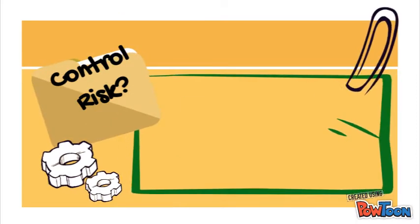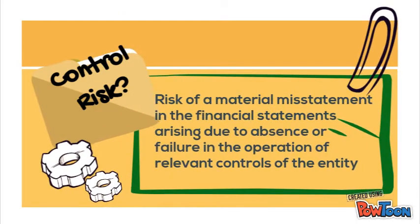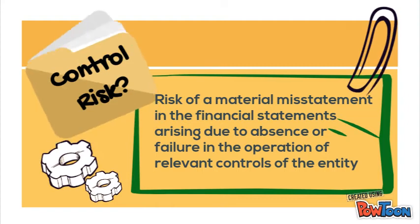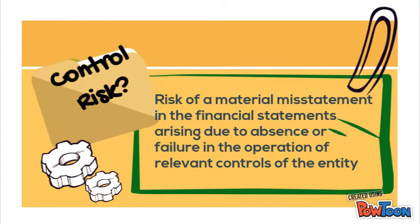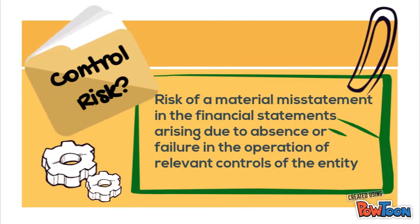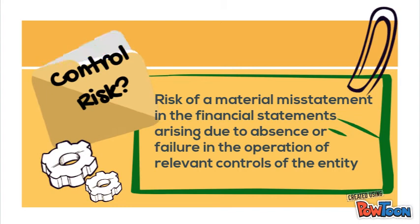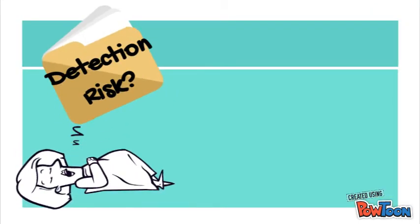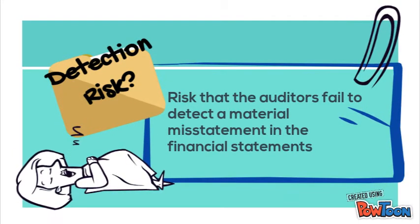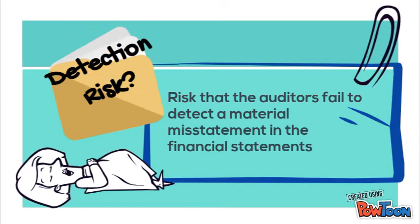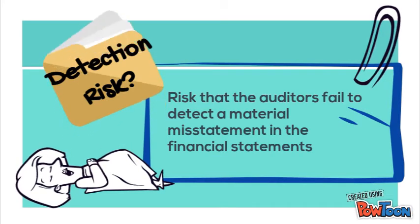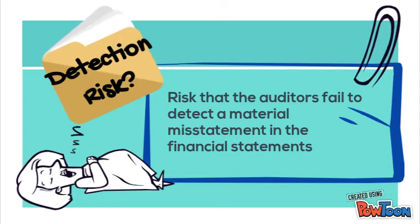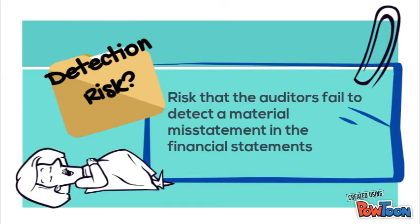Control risk is the risk that arises due to absence or failure in the internal control system of a company. For example, chances of control risk are high when an entity's segregation of duties is not well maintained. Detection risk is the risk that auditors fail to detect a material misstatement in the financial statements. However, this risk can be reduced by increasing the number of sample transactions for detailed testing.